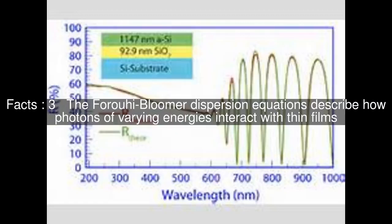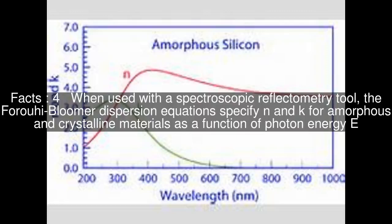The Forouhi-Bloomer dispersion equations describe how photons of varying energies interact with thin films. When used with a spectroscopic reflectometry tool, the Forouhi-Bloomer dispersion equations specify n and k for amorphous and crystalline materials as a function of photon energy, E.